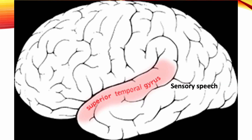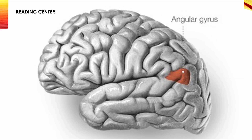Sensory speech is located at the back of the superior temporal gyrus. When injured, the patient is able to hear others but cannot understand the words. The reading center is located at the angular gyrus of the parietal lobe. This center enables the individual to understand written words. If injured, the patient has no problem seeing the words but is unable to understand their meaning — it is the loss of the ability to read.